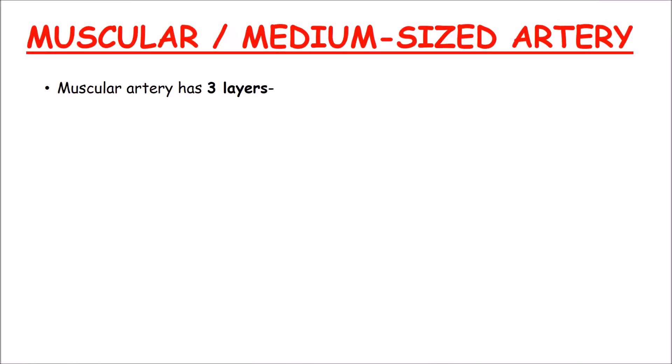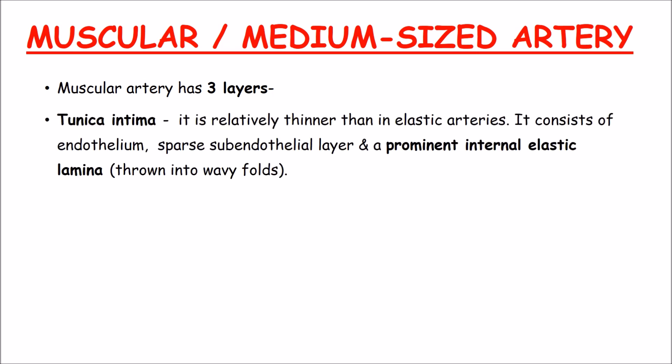Muscular or medium-sized artery also has three layers. The tunica intima is relatively thinner than in elastic arteries. It consists of endothelium, a sparse subendothelial layer, and a prominent internal elastic lamina which is thrown into wavy folds.